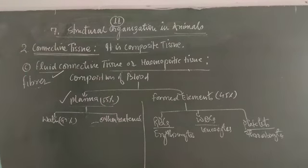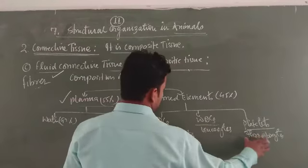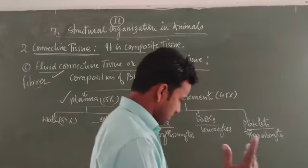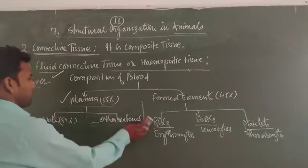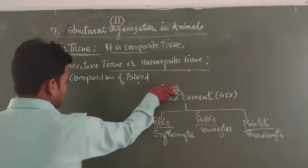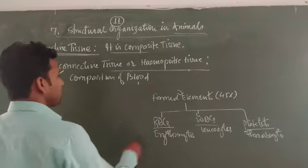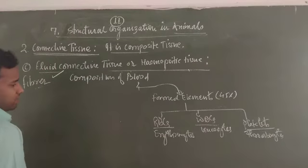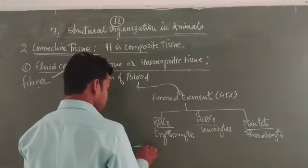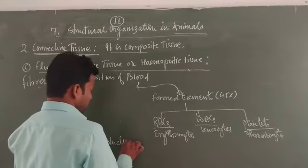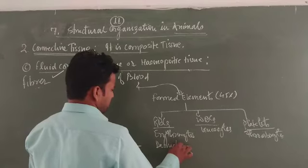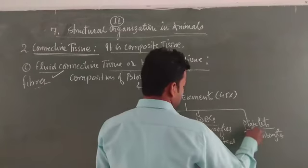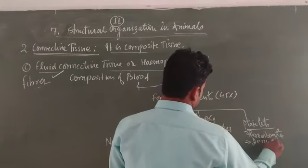The basic difference between erythrocytes, leukocytes, and thrombocytes is very important. Taking the parameter of nucleus: RBCs are in a denucleated condition — RBCs do not have a nucleus. WBCs are nucleated. Thrombocytes are also denucleated, with no nucleus found in this case.